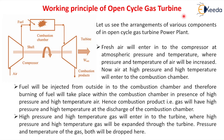Let us see the working principle of an open cycle gas turbine. This is the arrangement of the open cycle plant. This is the compressor, this is the combustion chamber, and this is the gas turbine. The compressor and gas turbine are both on the same shaft. Fresh air enters into the compressor at atmospheric pressure and temperature, and in the compressor the pressure and temperature of the air will increase.